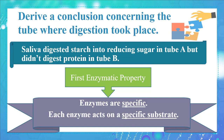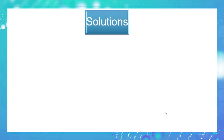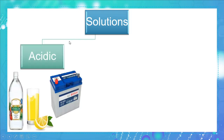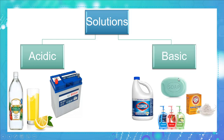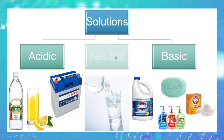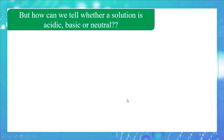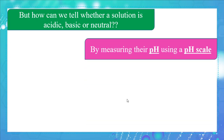Before we move to the next enzymatic property, let's introduce the types of solutions. Solutions can be acidic — like vinegar, lemon juice, and acids in batteries — can be basic — like bleaches, soap, and baking soda — and can be neutral, just like water.